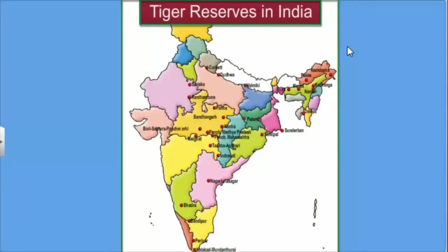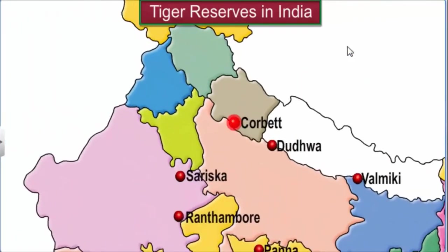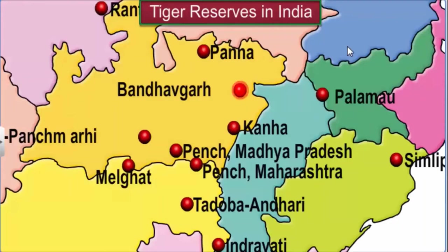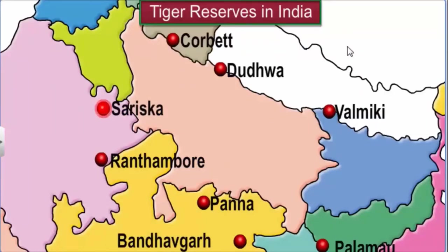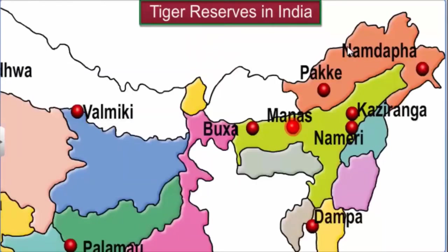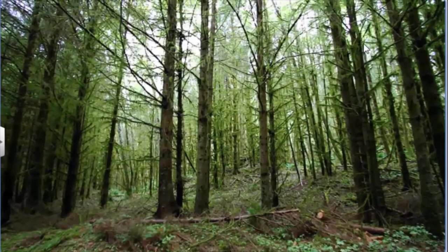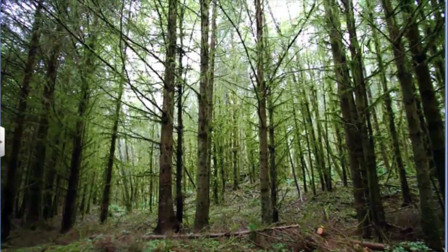At present there are 39 tiger reserves in India. Some of the main tiger reserves include the Jim Corbett National Park in Uttarakhand, the Sundarbans National Park in West Bengal, the Bandhavgarh National Park in Madhya Pradesh, the Sariska Wildlife Sanctuary in Rajasthan, the Manas Tiger Reserve in Assam, and the Periyar Tiger Reserve in Kerala.